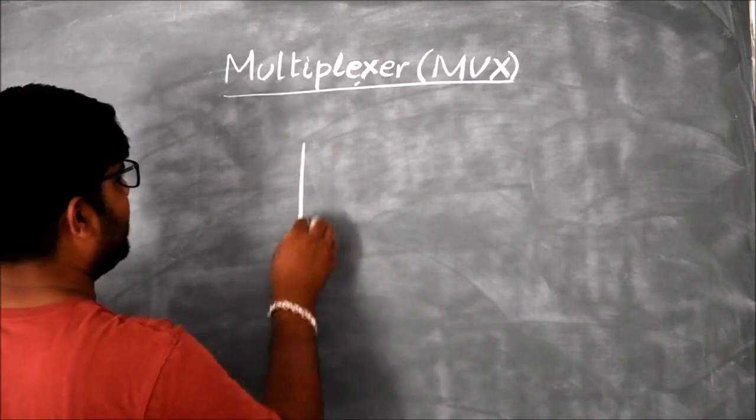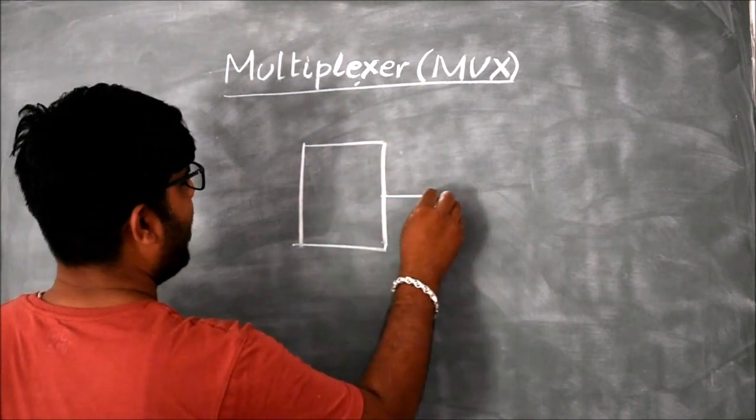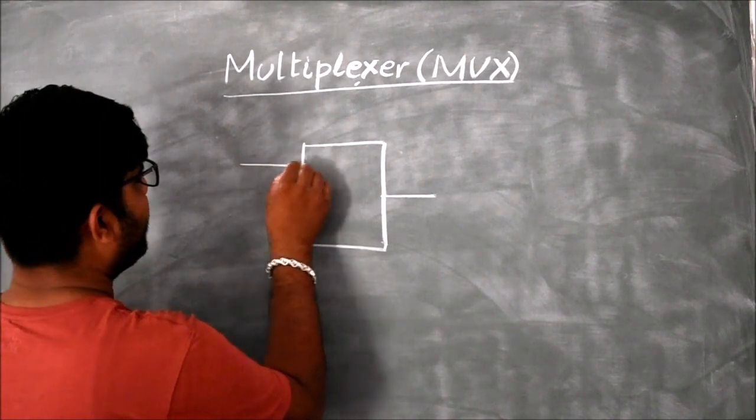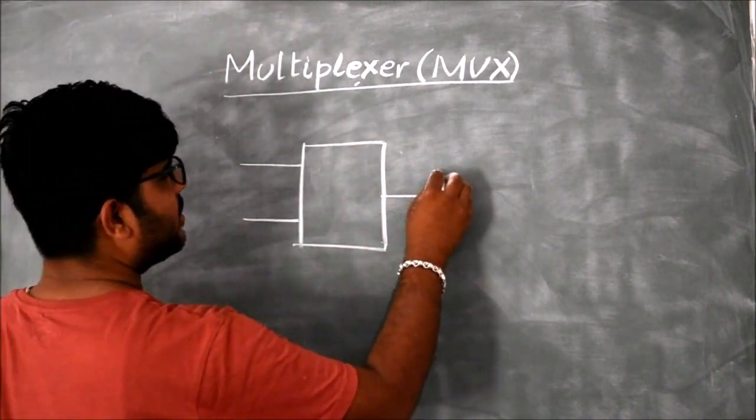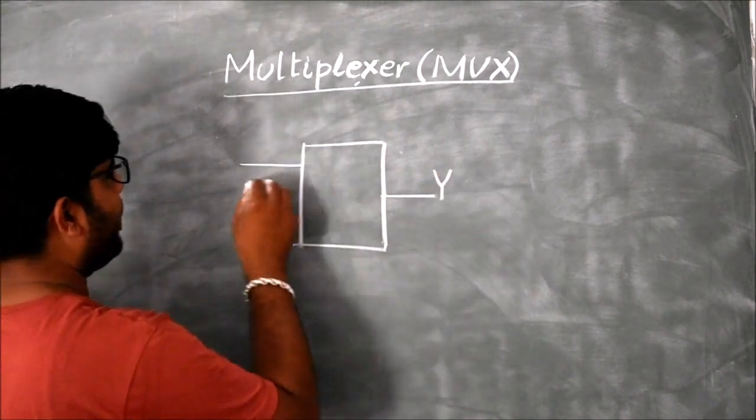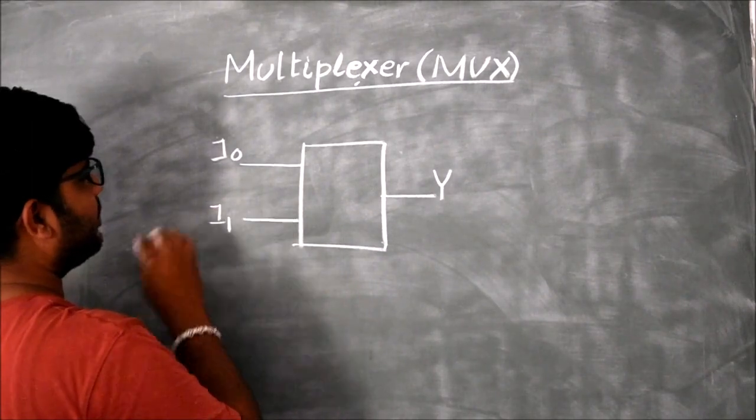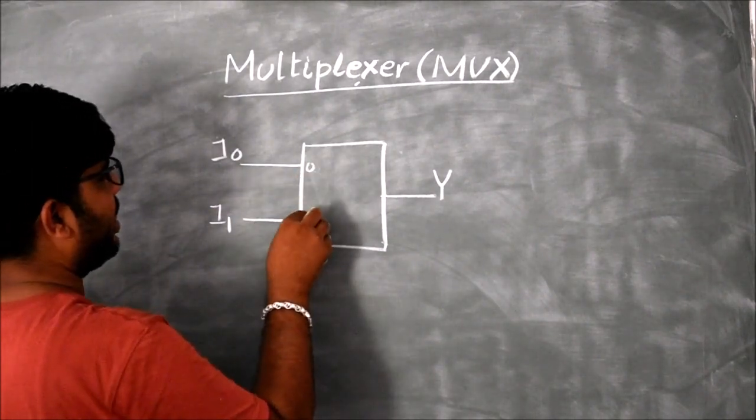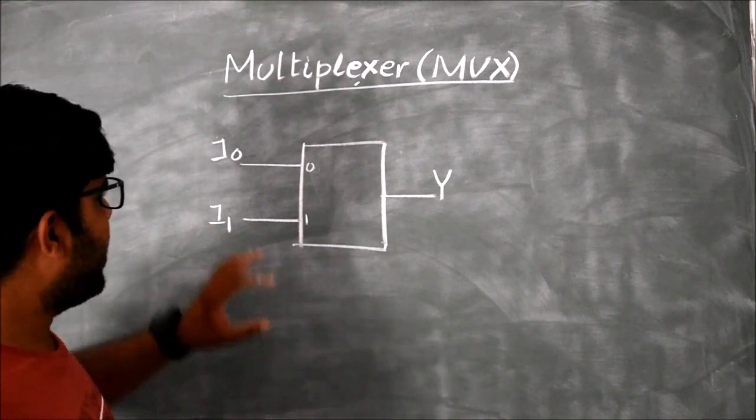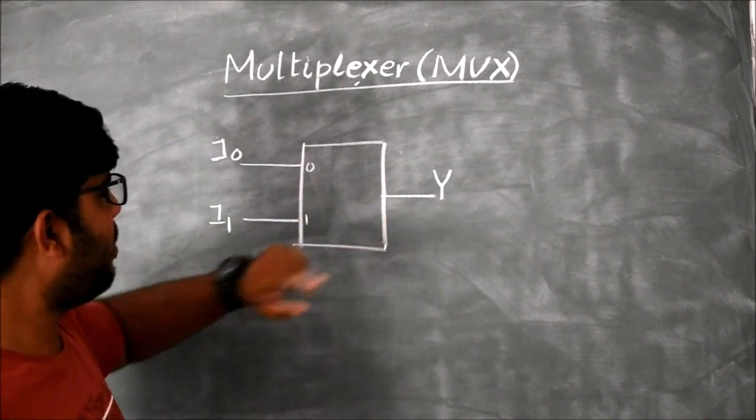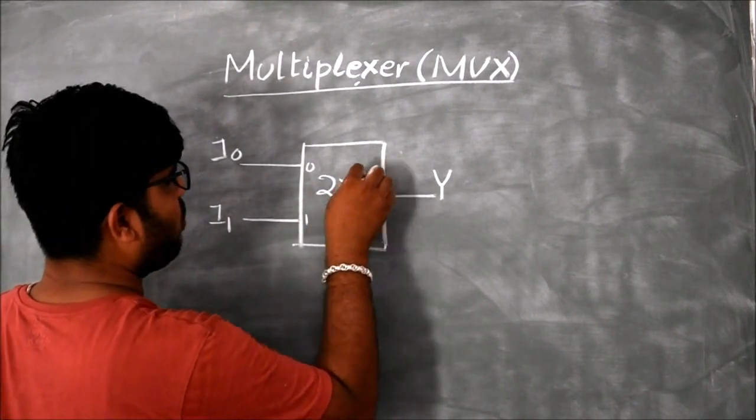For example, I am having this as a multiplexer with one output and two inputs. If I am having one output, this is called Y, and two inputs, I0 and I1. This is zero line and this is one line. I have two inputs but one output, that is why this is called 2 cross 1 MUX.